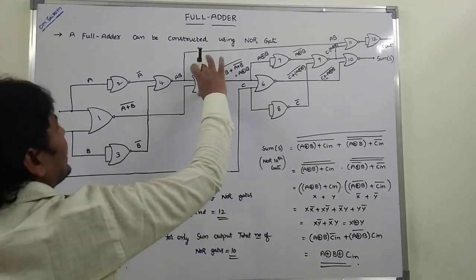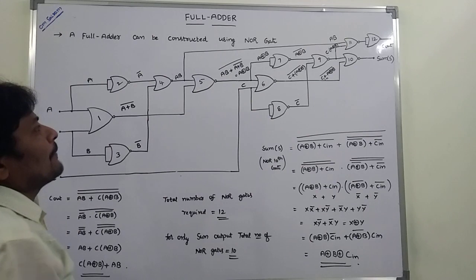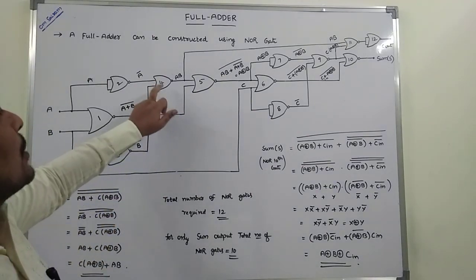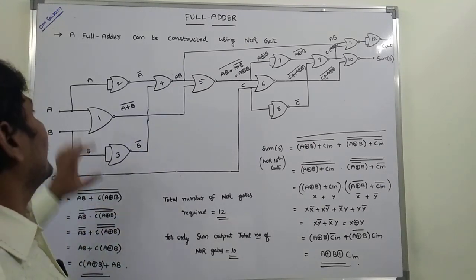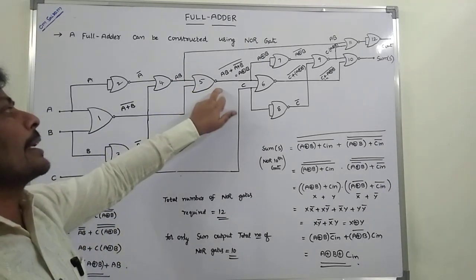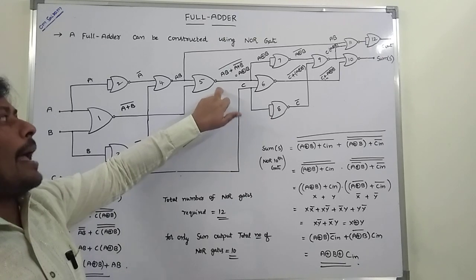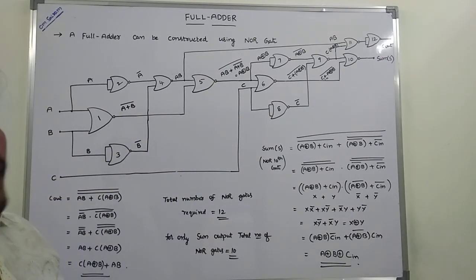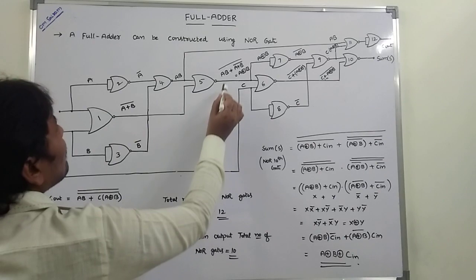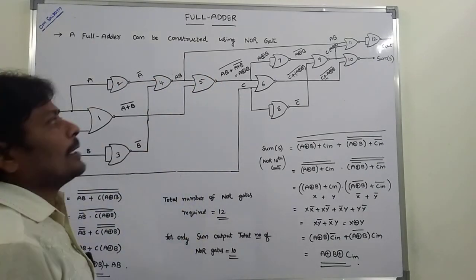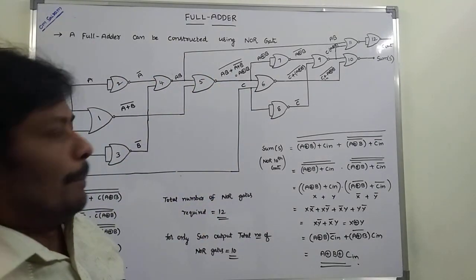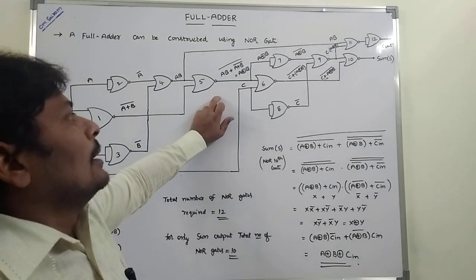The fifth NAND gate takes the output of the fourth NAND gate and the output of the first NAND gate as inputs, giving the output A XOR B. This is the half sum output of the first half adder, that is A XOR B.